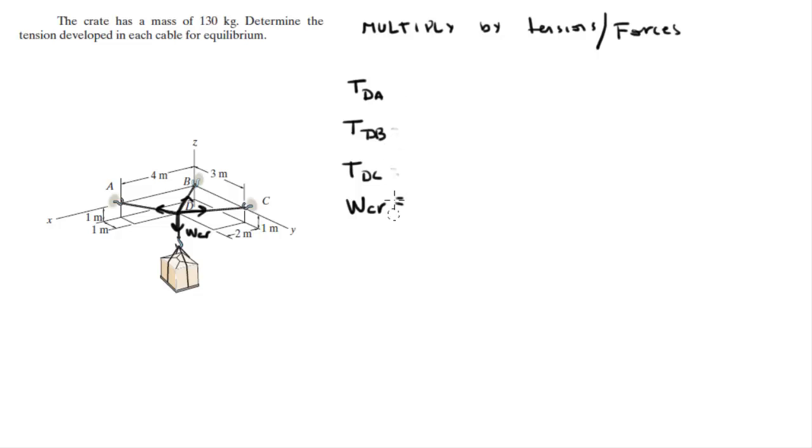You've got to multiply each of these times its respective unit vector. So U DA, U DB, U DC, and U for the crate.